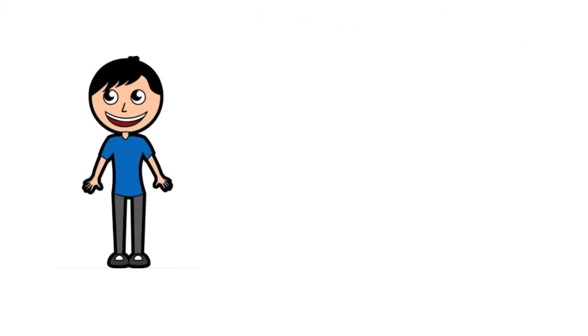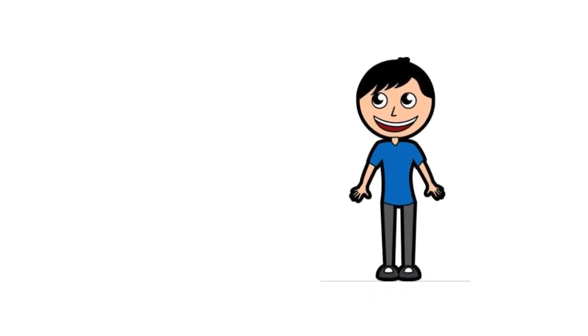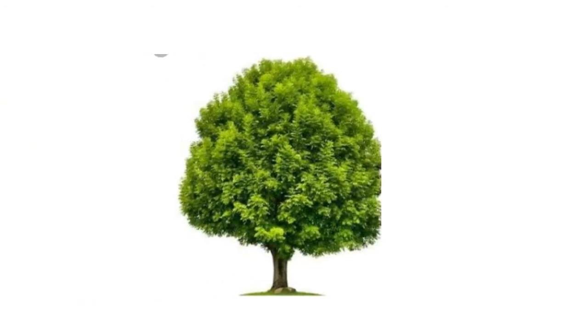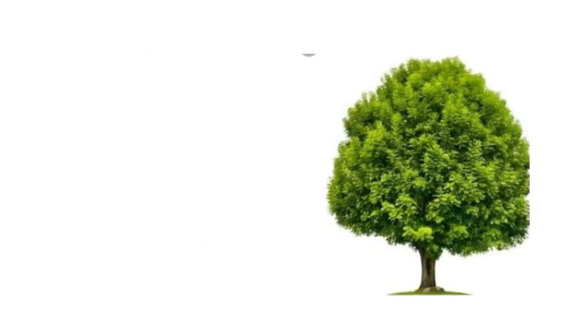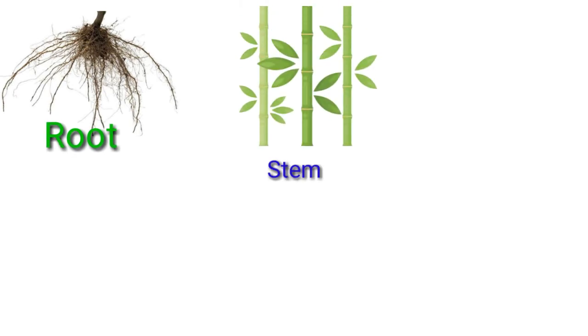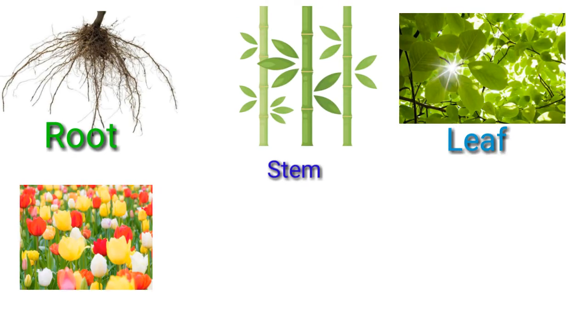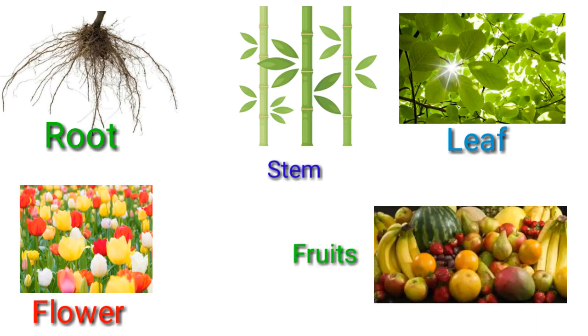We have different body parts to perform different functions. In the same way, plants also have different parts to perform different functions. Plants have five parts to perform different functions, and those are roots, stem, leaves, flower, and fruit. Now we will know in detail about these parts.